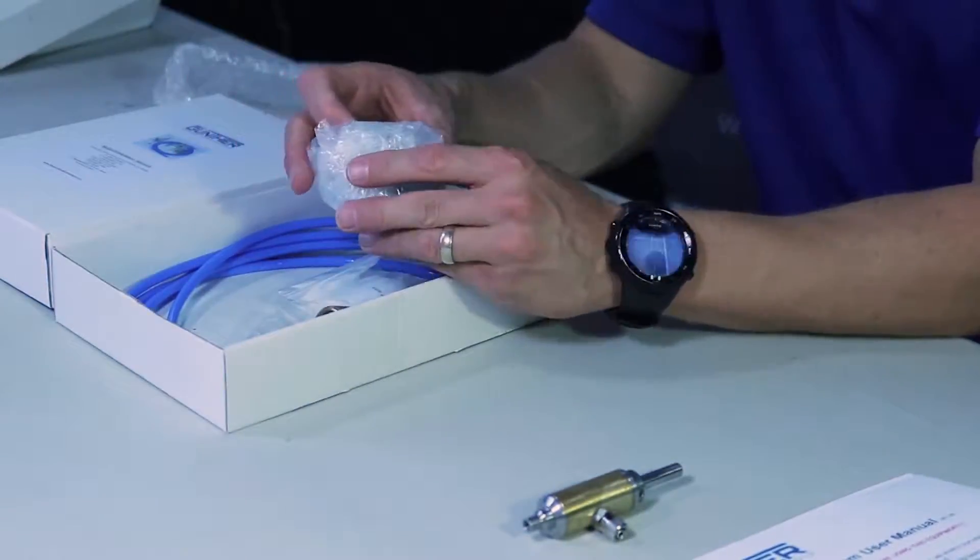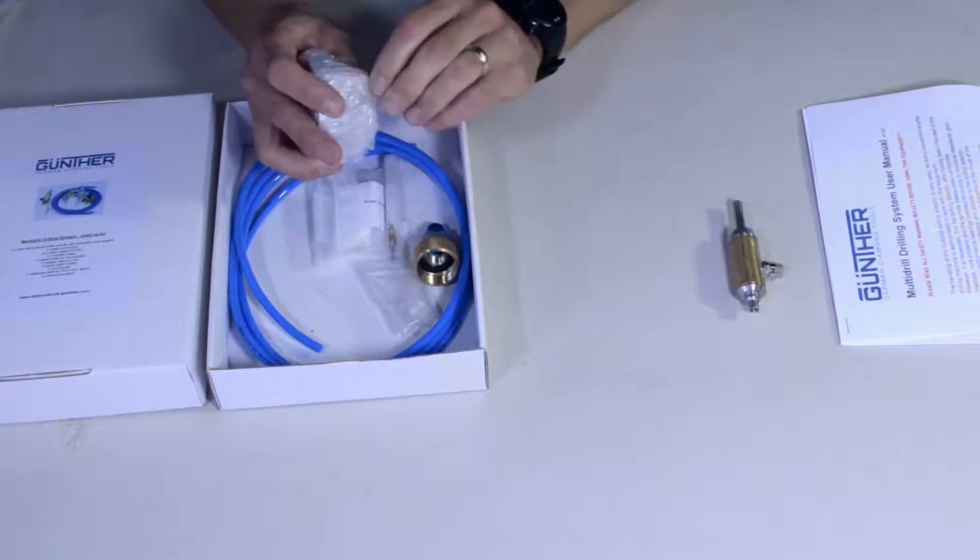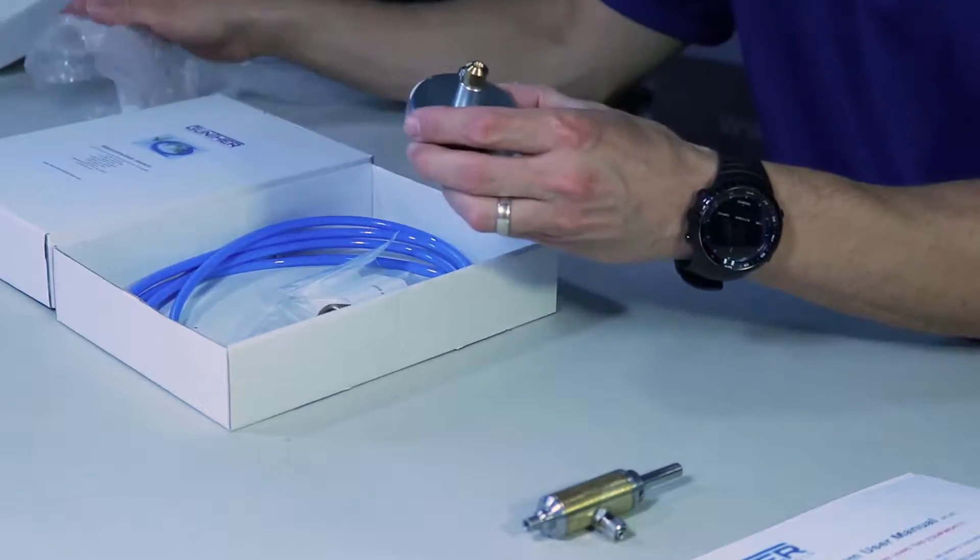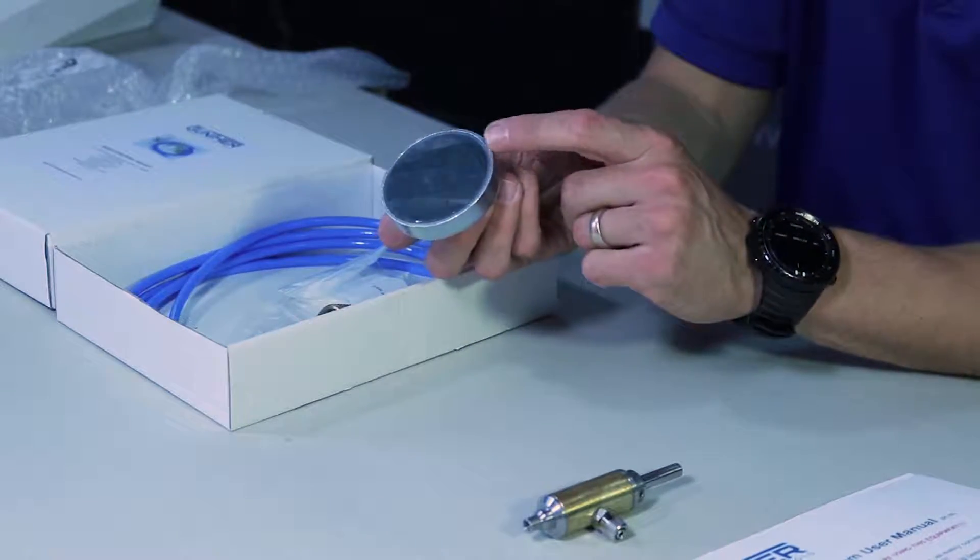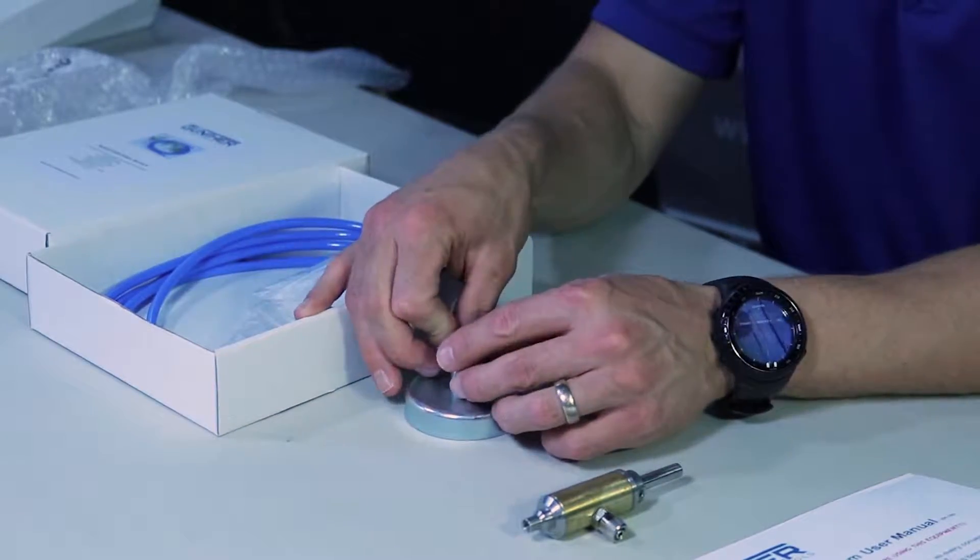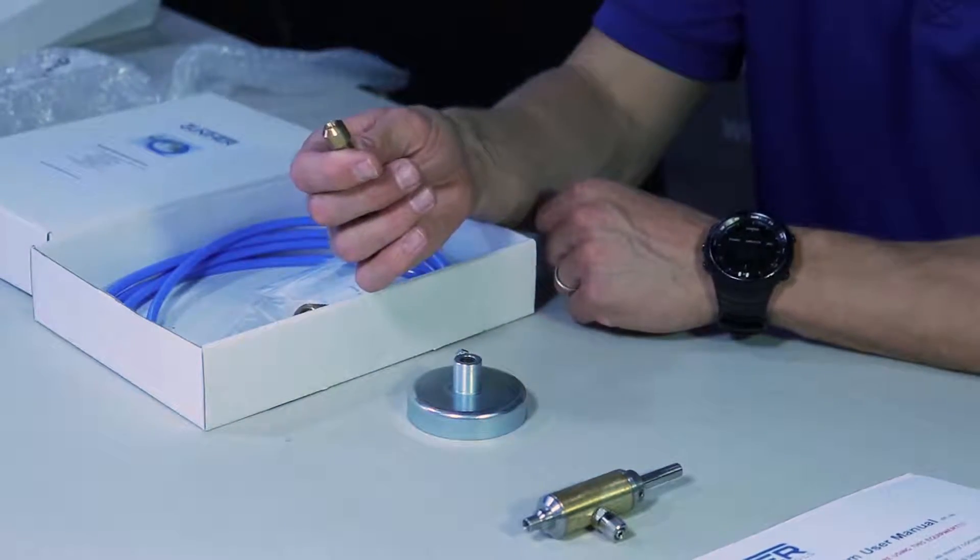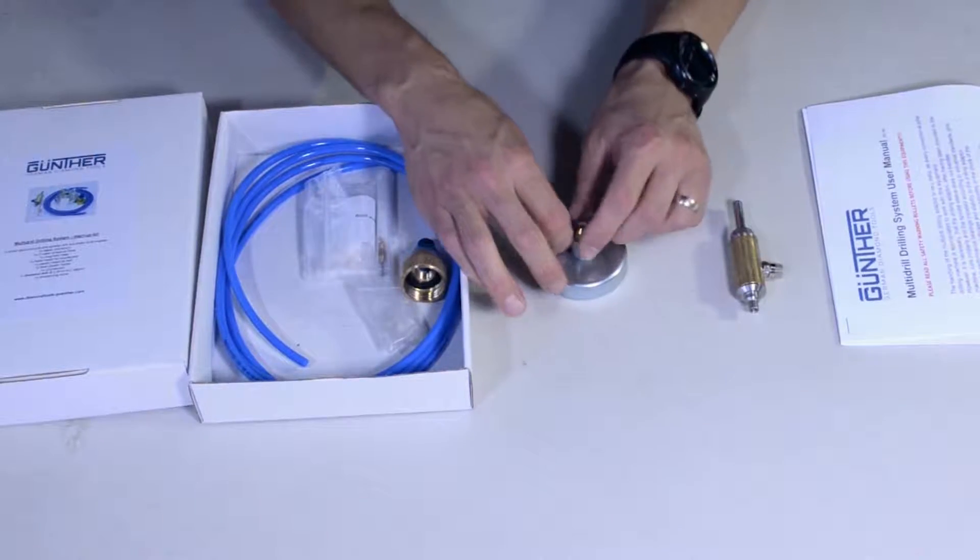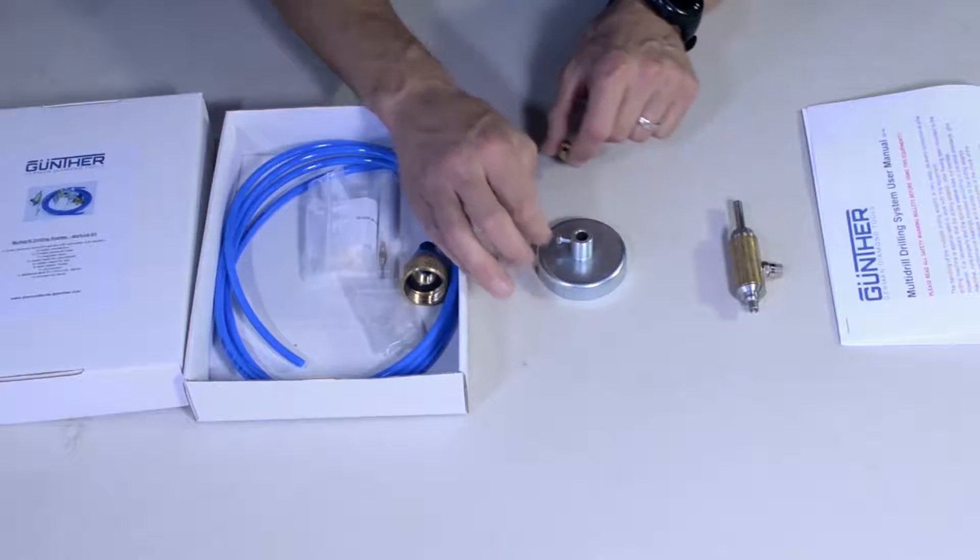This is the magnetic base. This magnet sticks on the foot of your drill press, and already inserted is the metal insert for the counterpart that just screws in there. You tighten the inserts with this bolt right here.